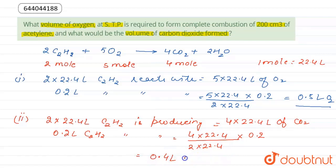0.4 liter. This is the answer for second question. So in complete combustion of 200 centimeter cube of acetylene, 0.5 liter or 500 centimeter cube of oxygen is used, and 0.4 liter or 400 centimeter cube of CO2 is produced.